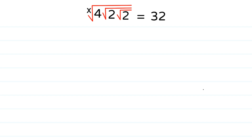Hello, welcome to how to solve this square root simplification problem. We have the xth root of 4 times square root of 2 times square root of 2 is equal to 32.